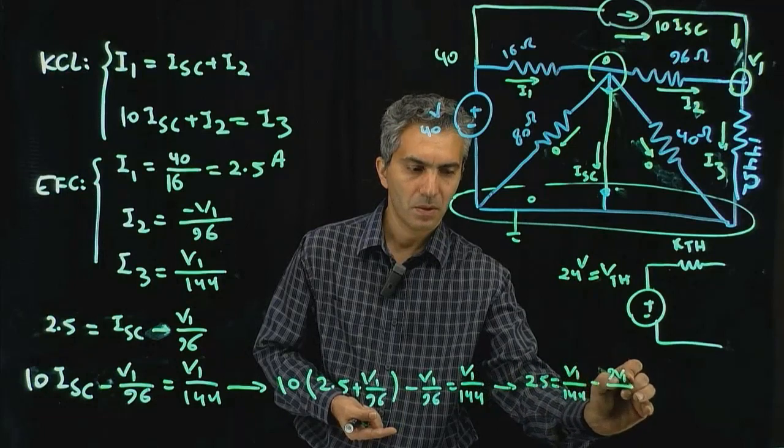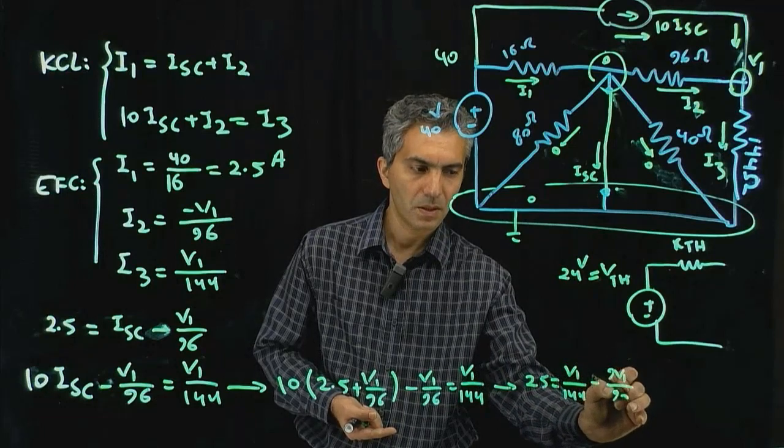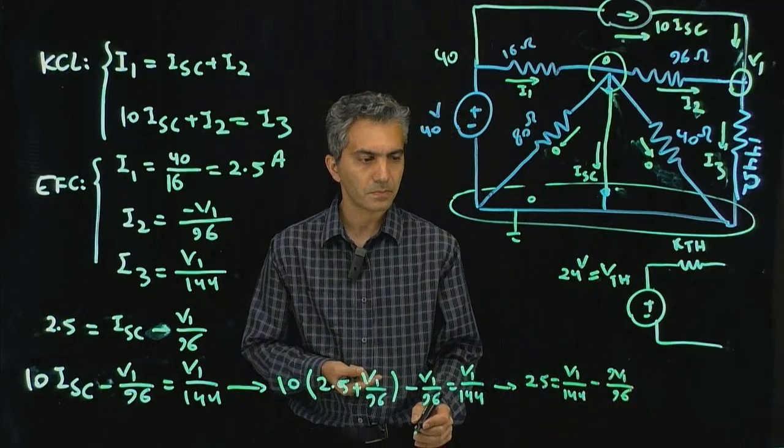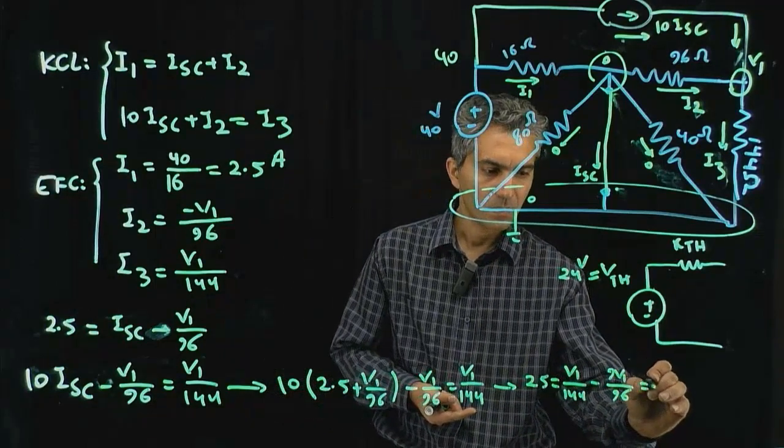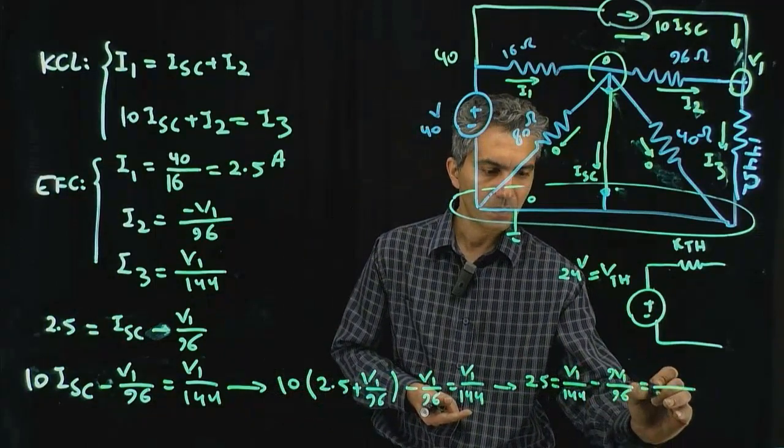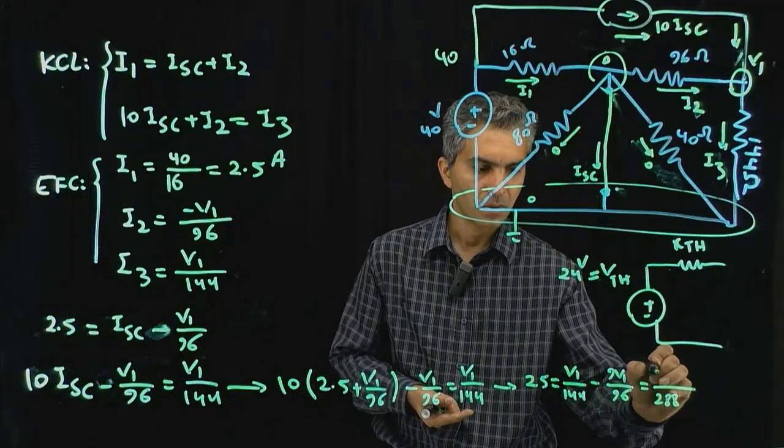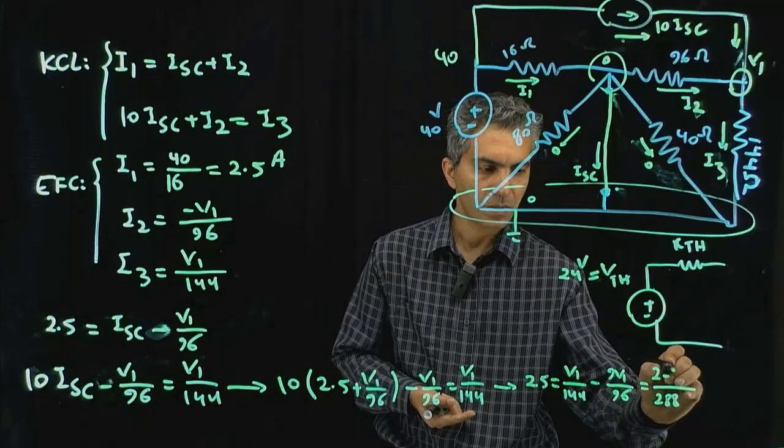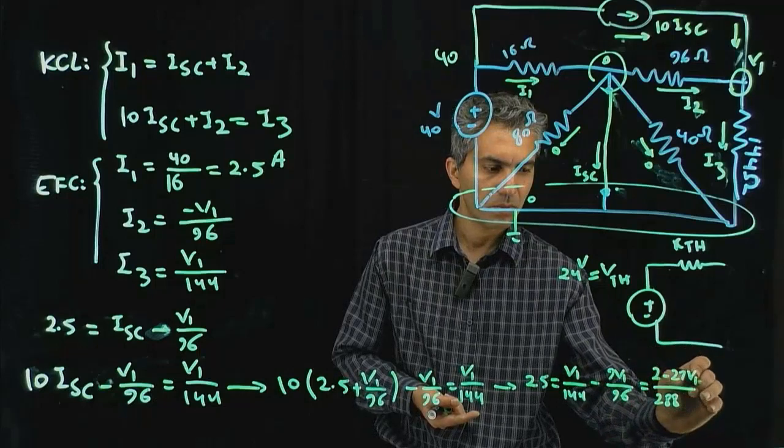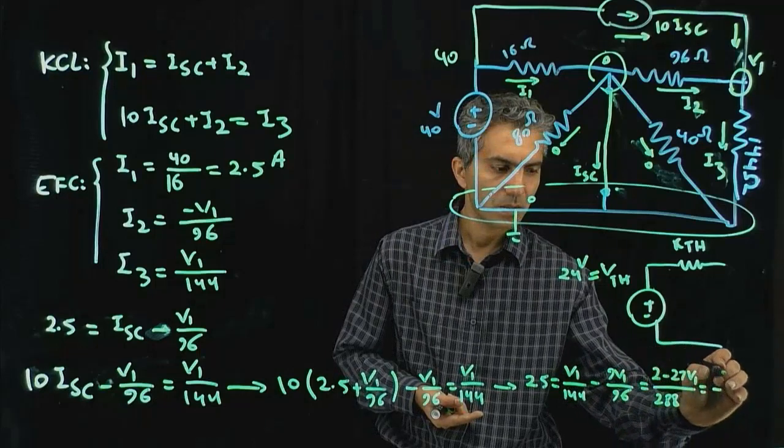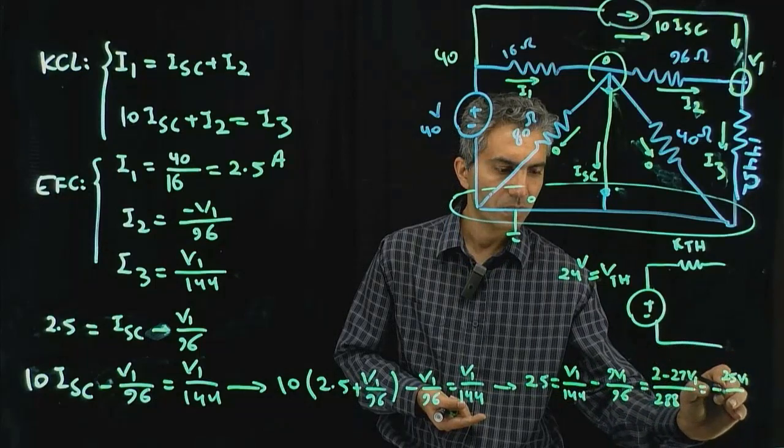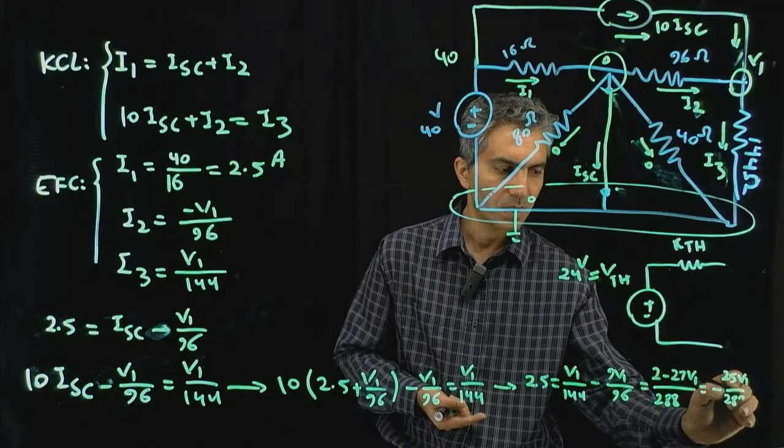That's 288, 2 minus 27, so that's minus 25 V1 divided by 288.